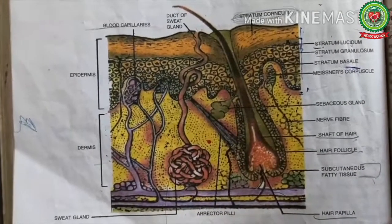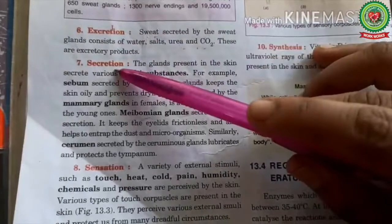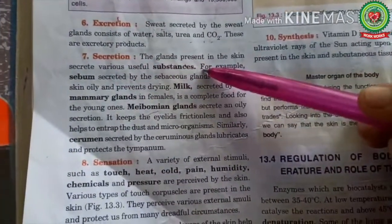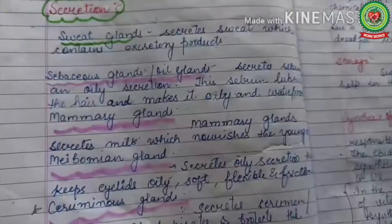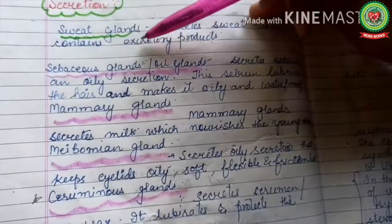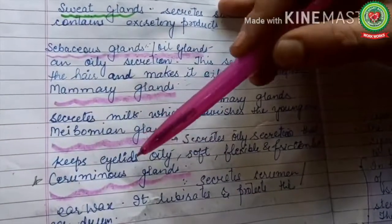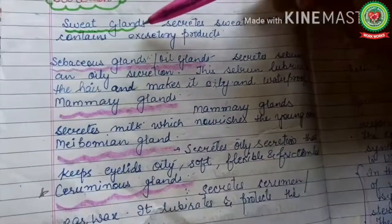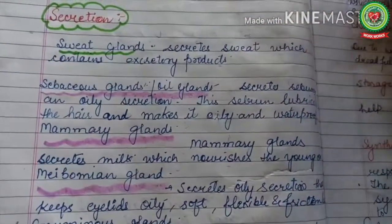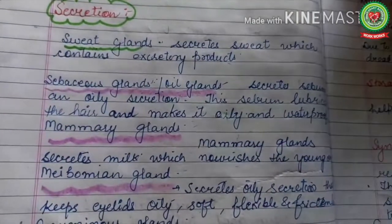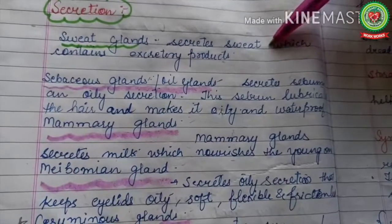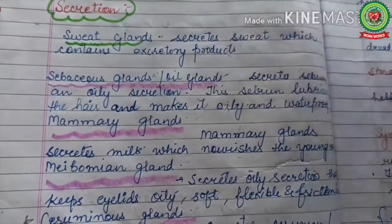Next function is secretion. The glands present in the skin secrete various useful substances. The various glands of skin are sweat glands, sebaceous glands, mammary glands, meibomian glands, and ceruminous glands. Sweat glands secrete sweat containing excretory products. Sebaceous glands are also known as oil glands.